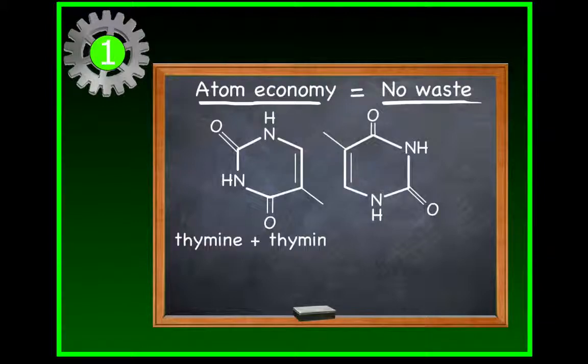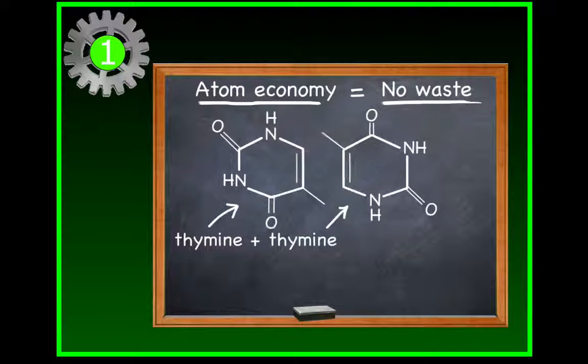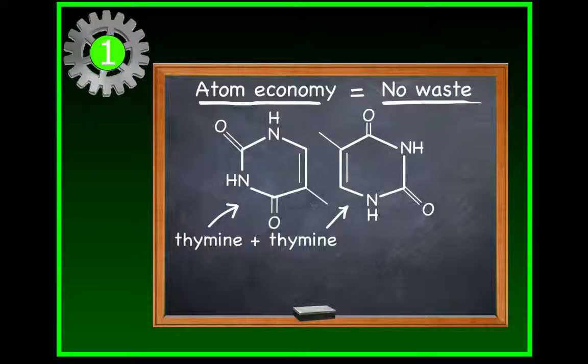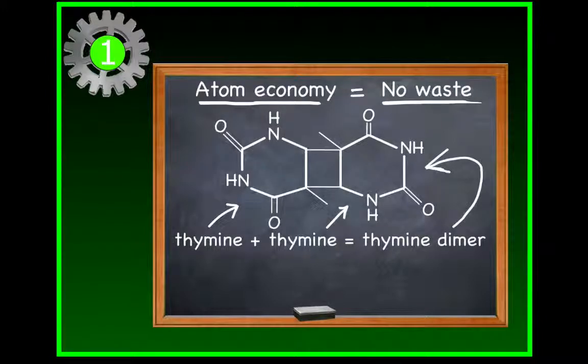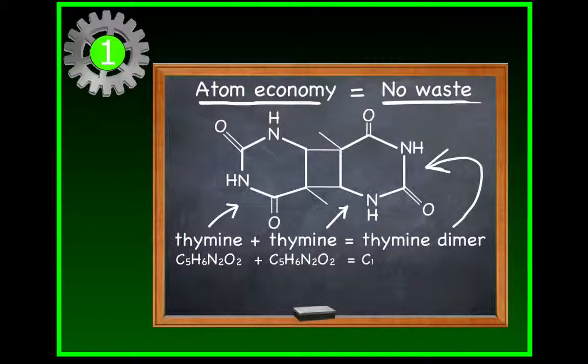In this example, we see two molecules of thymine coming together. They undergo a cyclization reaction, giving you a thymine dimer. If you add up the number of atoms in the starting materials and the number of atoms in the final product, you see it's the same before and after the chemical reaction.